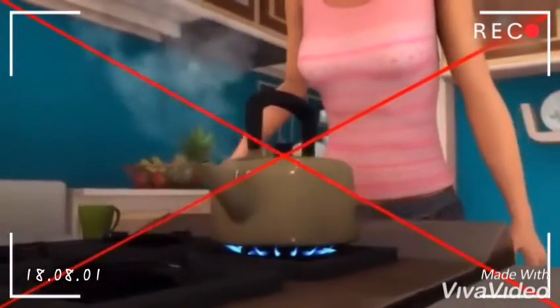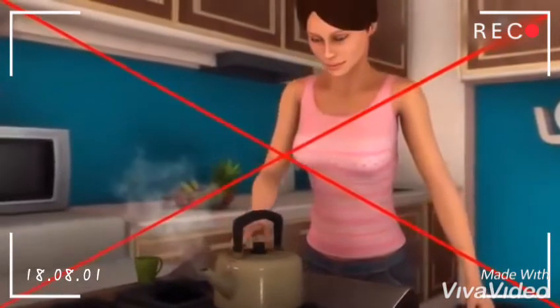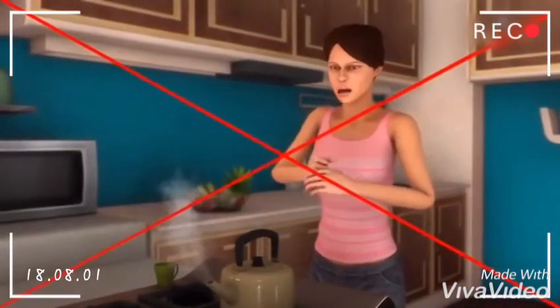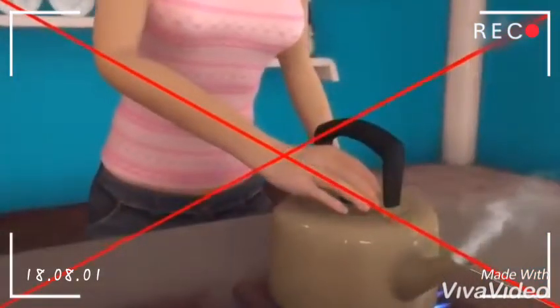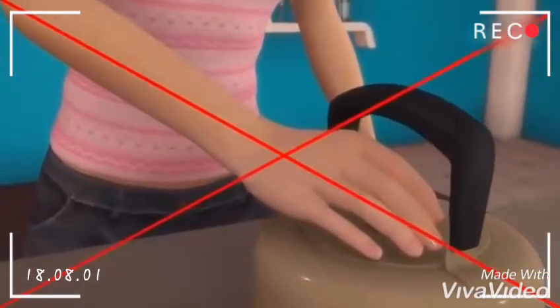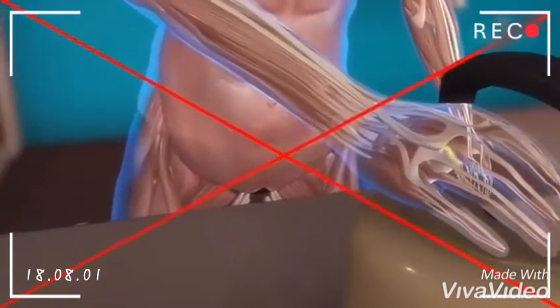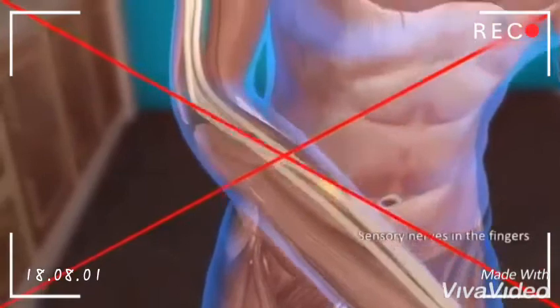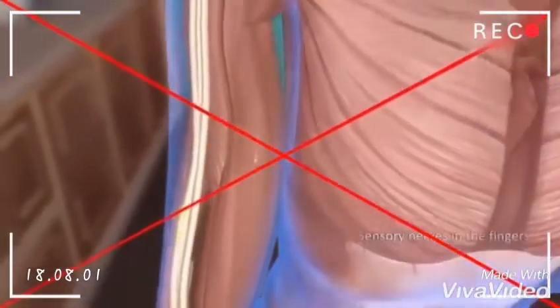If a person accidentally touches a hot object, she immediately pulls back her hand. Why did she do this? This happens as the receptors present in the fingers sense the heat from the kettle. The sensory nerves in the fingers absorb this impulse and transmit it to the spinal cord.